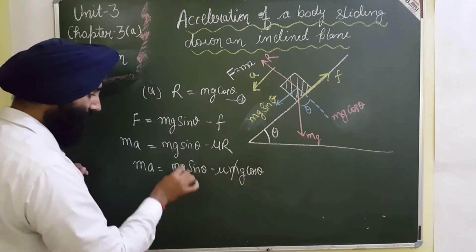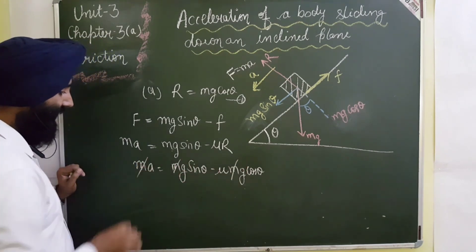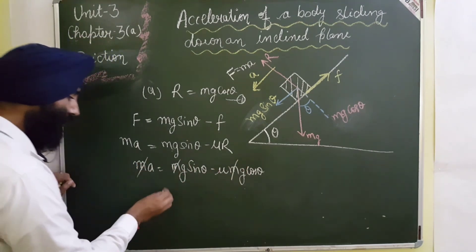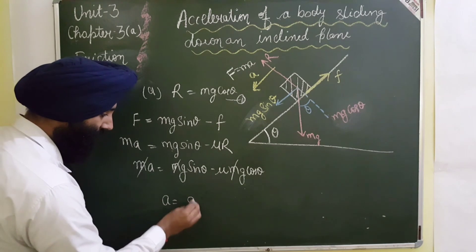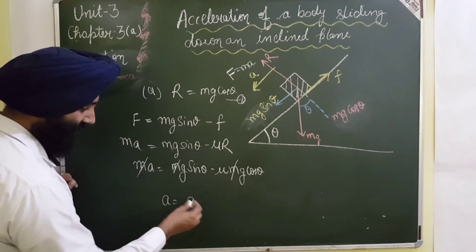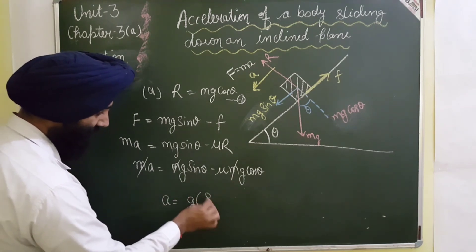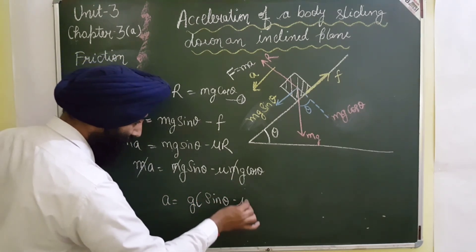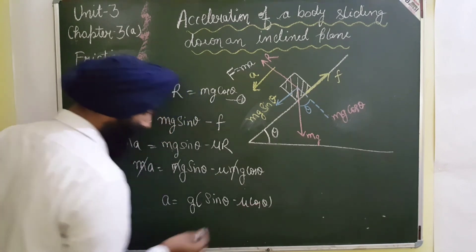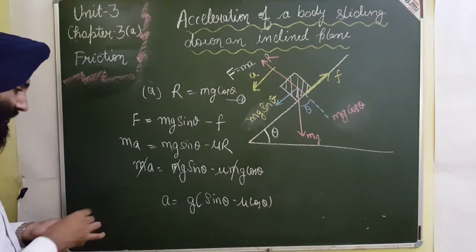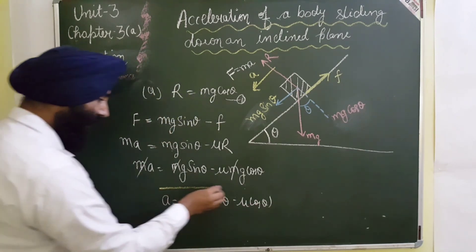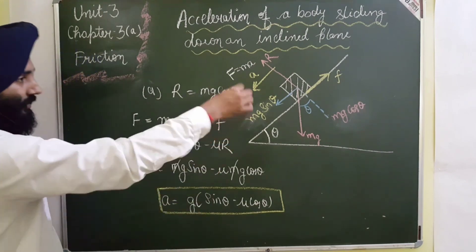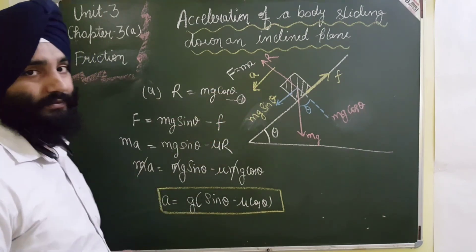Taking M as common and canceling from both sides, the value of acceleration is: A equals G(sin θ − μ cos θ). This is the value of acceleration when the body is coming downward on the inclined plane.